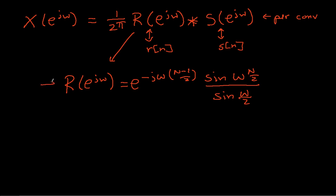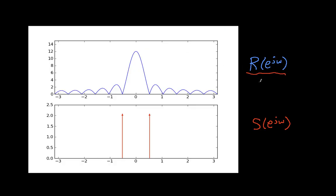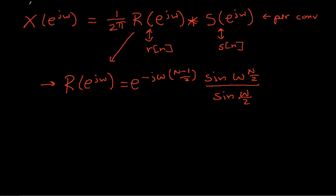So we basically now have this result. Looking at plots: this is the magnitude of the Fourier transform of the rectangular pulse, and this is the Fourier transform of the cosine — just a delta function at ω₀, which in this case is 2π/12, or π/6. The next thing we need to do is work out what this convolution will be.